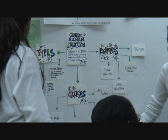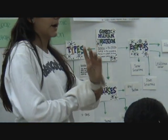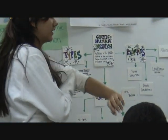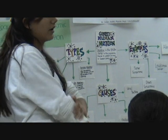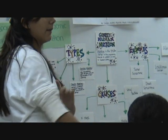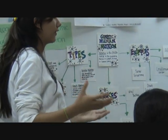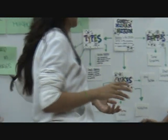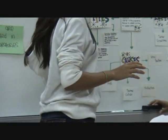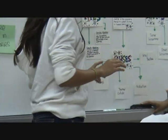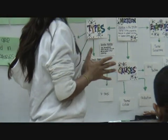So the types — there are four basic types of mutations. There are a big amount of types and they have different names, but these are the four basic types that are covered.